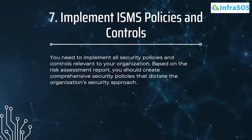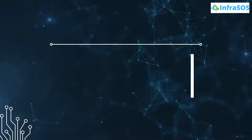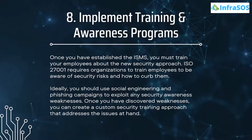Number eight is implementing training and awareness programs. Once ISMS implementation is done, the next step is to train your employees to be aware of security risks and how to curb them. You should use social engineering and phishing campaigns to exploit any security awareness weaknesses. Once you have discovered these weaknesses, you can create a custom security training approach that addresses the issues at hand.